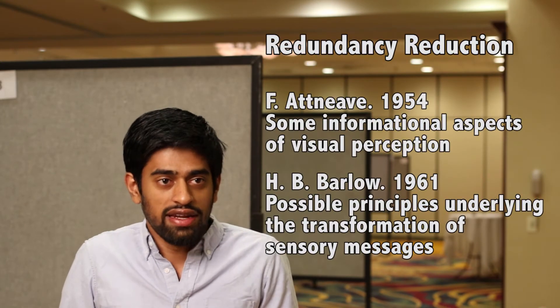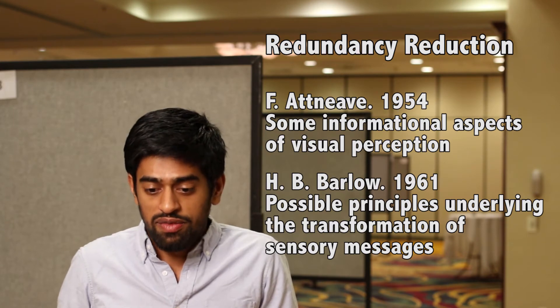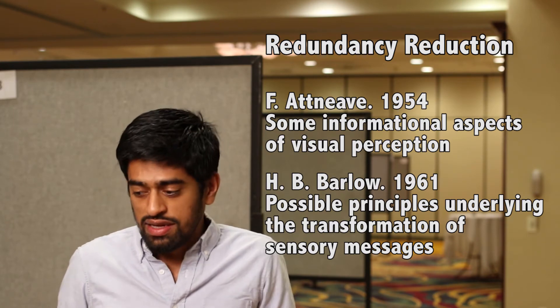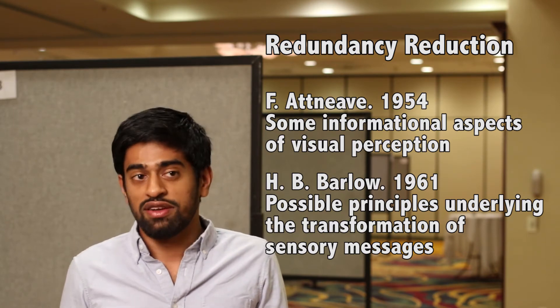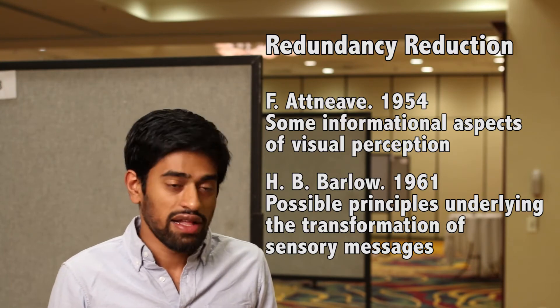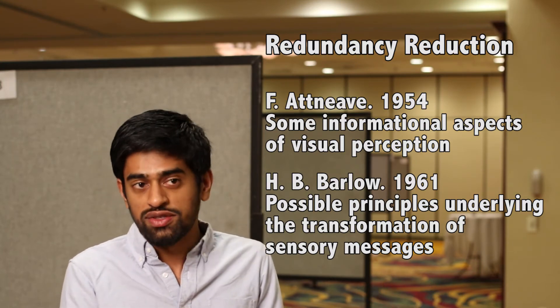Those highly influential theories go back to the 60s and even earlier, with Barlow talking about the idea of redundancy reduction — the idea that in a lot of natural stimuli, they're highly redundant. If you look at an image, two pixels that are nearby tend to be very correlated. So maybe what early sensory systems are trying to do is represent those natural stimuli in a way that doesn't waste the highly precious energetic resources needed to encode that redundant information.